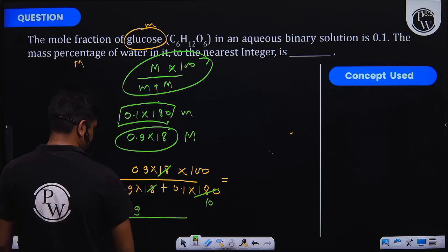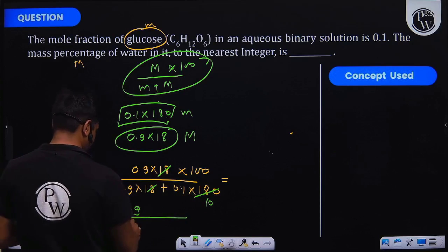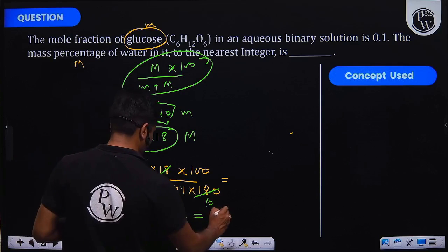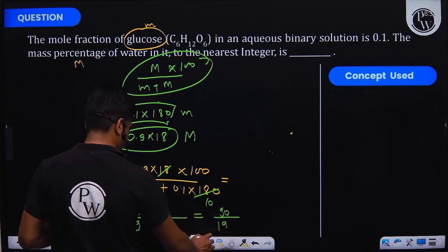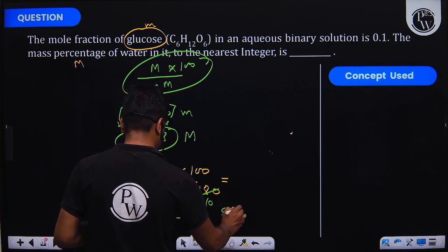And here we will get 0.1 times 10, which is equal to 1. So we have 0.9 over 1.9 times 100, which equals 900 over 19, or we can say 900 by 19.